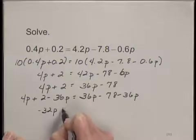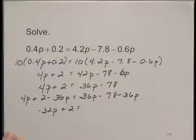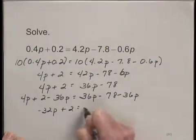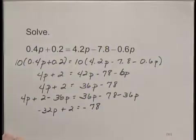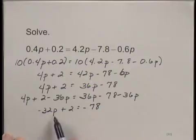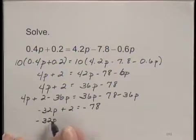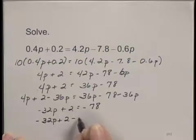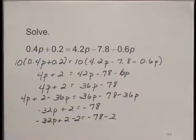And then I have a plus 2. And on the right hand side, 36p minus 36p is 0, so I just have negative 78 on the right hand side. Now I'd like to get this p term alone on the left hand side, and I can do that by subtracting 2 on both sides of the equation. So I can write negative 32p plus 2 minus 2 equals negative 78 minus 2.